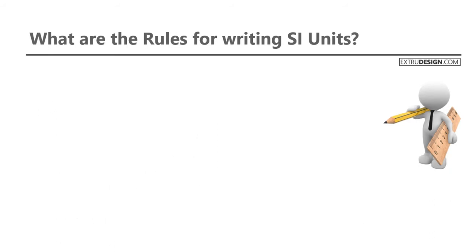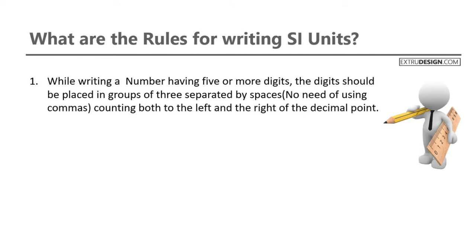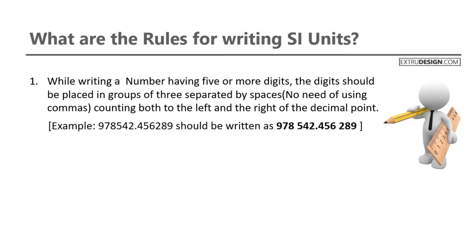The first rule: while writing a number having five or more digits, the digits should be placed in groups of three separated by spaces, counting from both left and right of the decimal point. We should not use any commas. For example, this number can be written in groups of three like this.